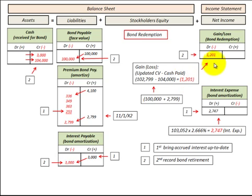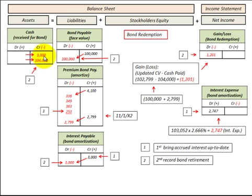That $1,201 difference is a loss, so we debit our loss account for $1,201. The closing entries are: debit bonds payable $100,000, debit bonds payable premium $2,799, debit interest payable $3,000. On the credit side, we reduce cash for the $3,000 interest payable and $104,000 for the cash paid to retire the bond.